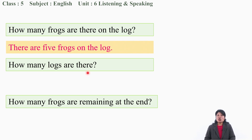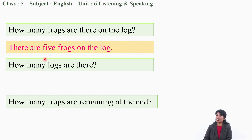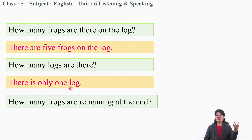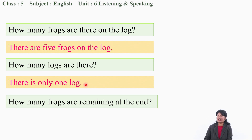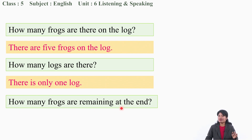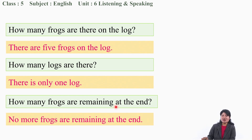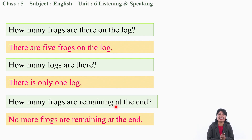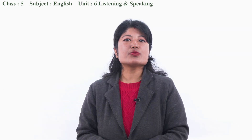How many logs are there? Are there many logs? There is only one log. All five frogs were sitting on it. Finally, how many frogs are remaining at the end? All jumped into the pool, so no more frogs are remaining at the end. We are done with it. Let us move to today's session.